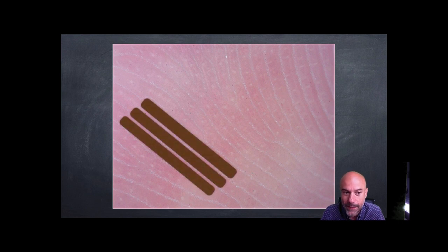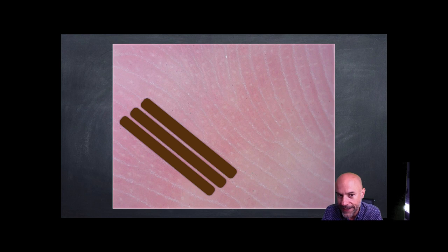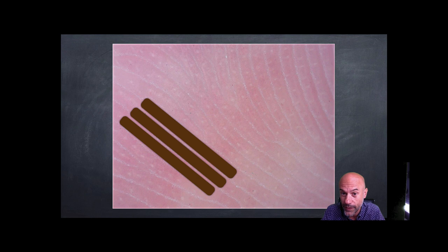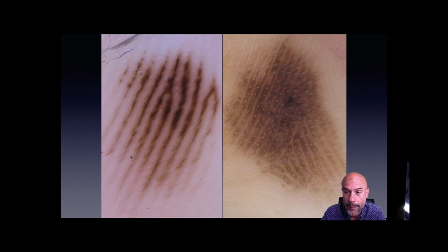In contrast, when the pigmentation is located on the ridges, again parallel lines, but this time much thicker because they are located on the ridge. This is the parallel ridge pattern, and it is associated with melanoma.